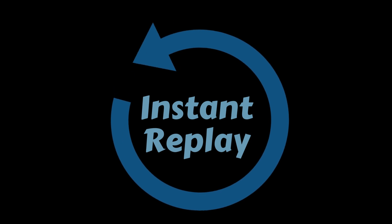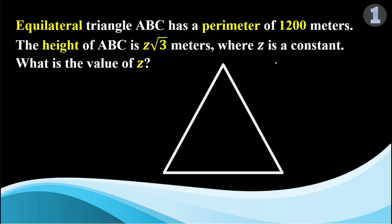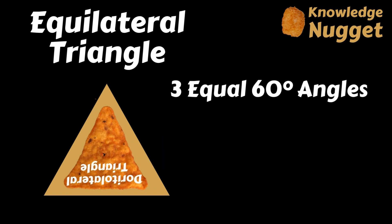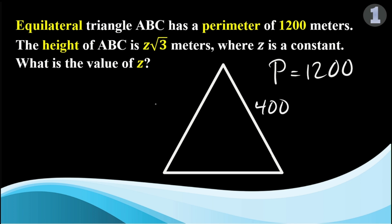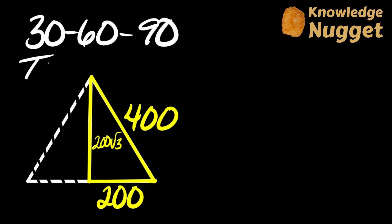Let's quickly review that last problem. The question was asking for the value of z, and z had to deal with the height, so we knew we needed to draw a height in our triangle. But what did we know about our triangle? It was an equilateral triangle with a perimeter of 1,200. Equilateral triangles have three equal sides and three equal angles, so we were able to take the perimeter of 1,200 and split it evenly into 400 on all three sides. Once we drew the height, that split the bottom side into pieces of 200 each, creating a 30-60-90 triangle.